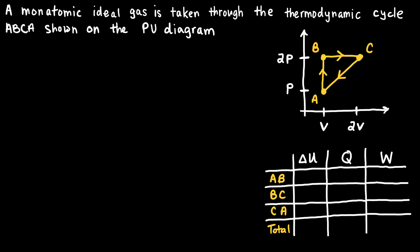This video is an analysis of a monatomic ideal gas taken through the thermodynamic cycle ABCA shown on the PV diagram.